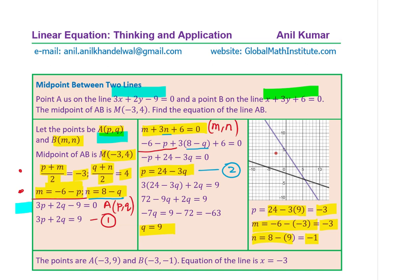So basically, from this we can say that the points are A is (-3, 9) and B is (-3, -1).